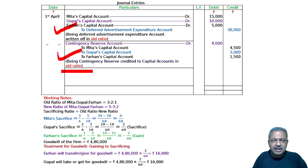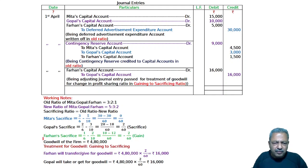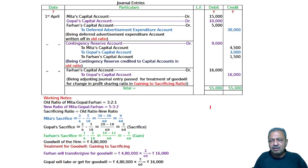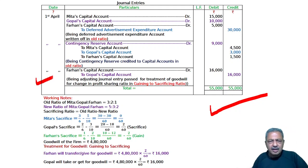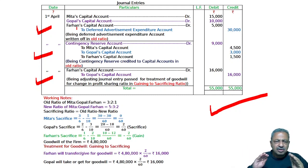Deferred advertisement expenditure and P&L debit balance are always written off in the old ratio. But in the case of goodwill, it is always gaining to sacrificing — Farhan's capital account debited to Gopal's capital account. Any profit reserve is distributed in the old ratio, and any accumulated loss such as deferred advertisement expenditure or P&L debit balance is also debited to the old partners' capital accounts in the old ratio. This is all about your answer.